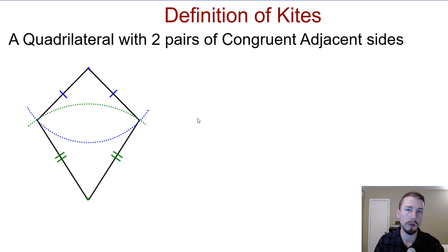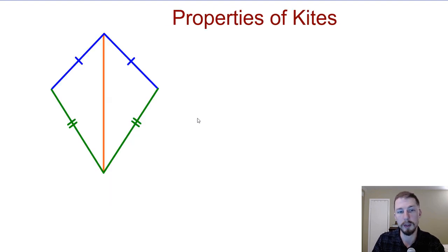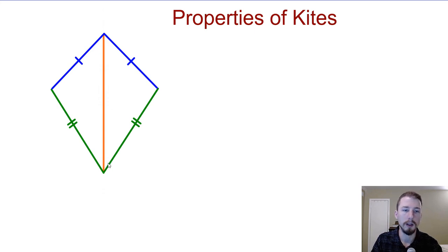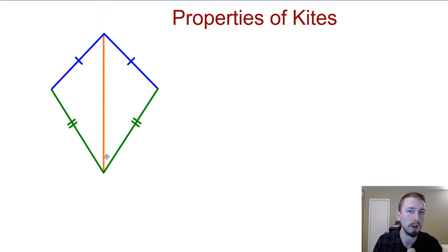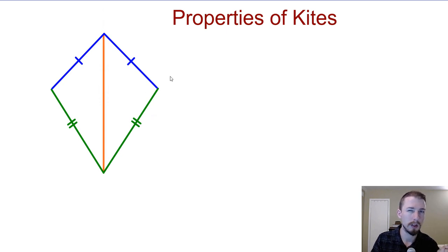We'll discover some of the properties of kites. The blue sides are the same, the green ones as well. If I construct the vertical diagonal here, this diagonal is actually going to go along a line of symmetry — and there's one line of symmetry. That's honestly the easiest way to remember all the properties of a kite. And there's a little connection with the rhombus that comes into play here as well.